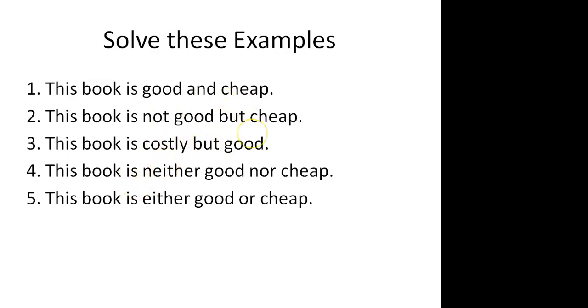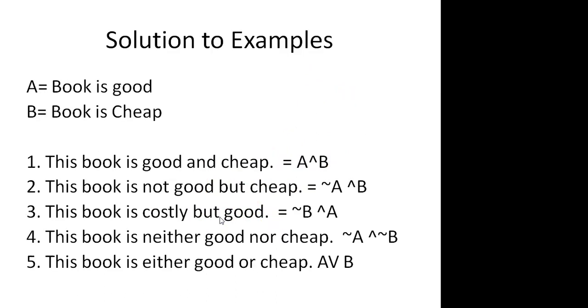Then we say the book is neither good nor cheap, so negation of A and negation of B. And then we say the book is either good or cheap. So this representation, let us look at it. It is either the book is good or it is cheap, so we put the symbol of OR in between.